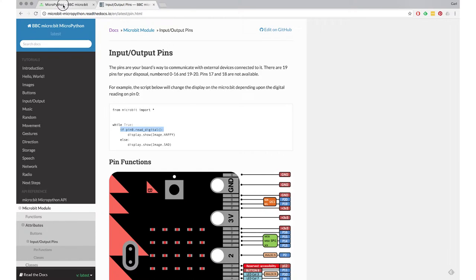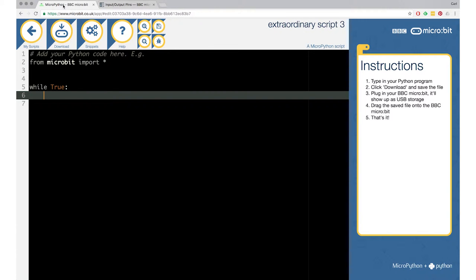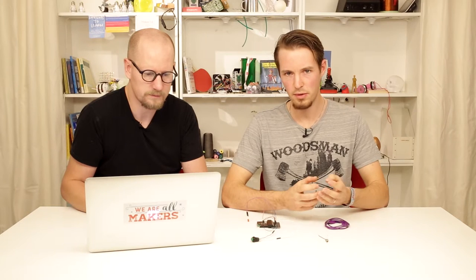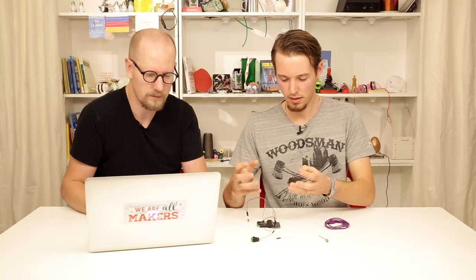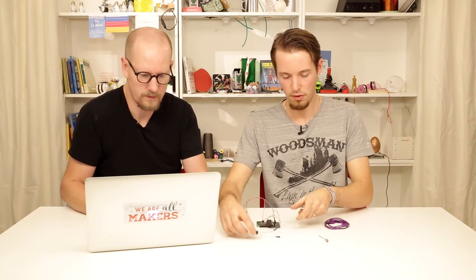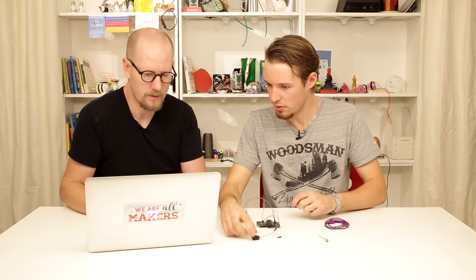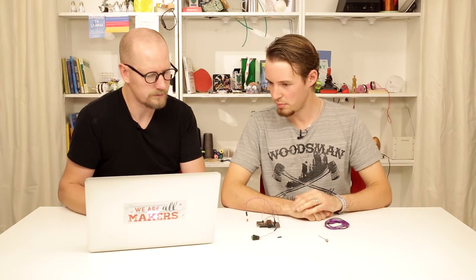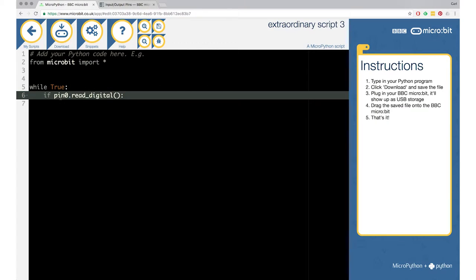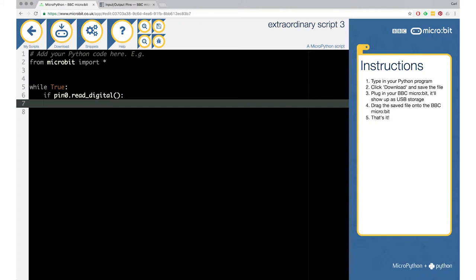Read digital pin zero basically activates that pin. What this does is an if statement which will check the value it's reading from pin zero. We want to use pin zero—it already says pin zero, that's good. So now it reads pin zero.